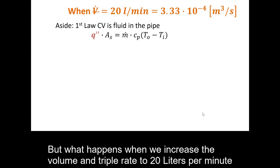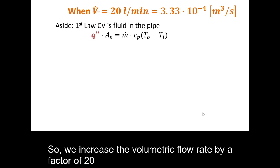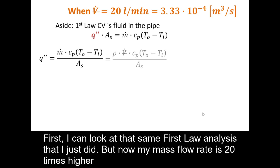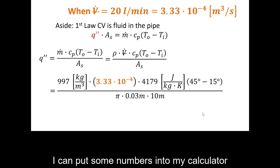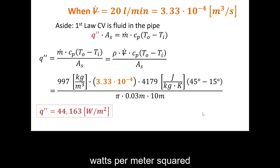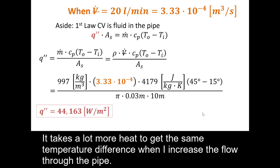Now, what happens when we increase the volumetric flow rate to 20 liters per minute — a factor of 20 increase? Applying the same first-law analysis with a mass flow rate 20 times higher, I find that the required heat flux increases by a factor of 20, up to 44,163 W/m². It takes much more heat to achieve the same temperature rise when the flow rate is increased.